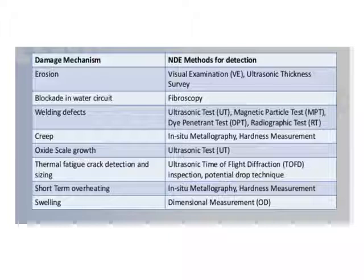Hardness measurement and oxide scale growth can also be assessed. Ultrasonic testing uses a high-intensity sound wave that travels into the material; if there is a discontinuity it reflects back with lower intensity, allowing us to detect cracks. Thermal fatigue crack detection and sizing, short-term overheating, and swelling due to moisture absorption or chemical attack are other defects detectable by these methods.